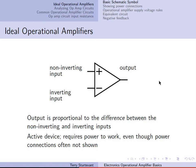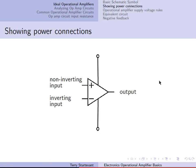It's an active device, so that means it requires power to work, even though the power connections aren't usually shown. Here's what it looks like when the power connections are shown — we have a positive supply and a negative supply.